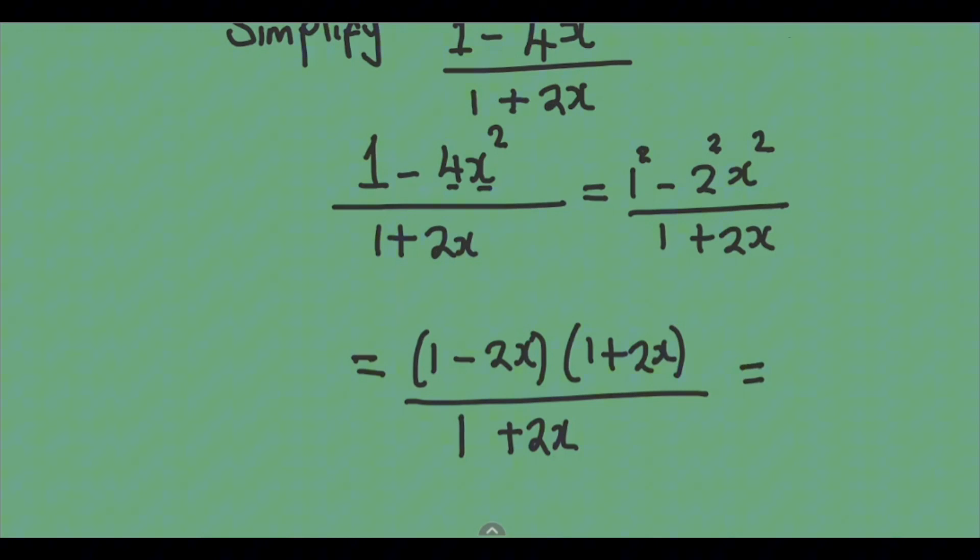we cancel something with the denominator. So we can see 1 plus 2x, this is common to this. So here 1, even here a 1. So 1 times 1 is 1 times this. We get the same value. So we're going to have 1 minus 2x.